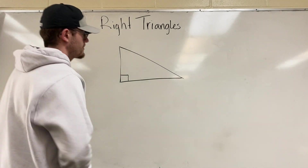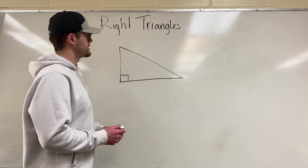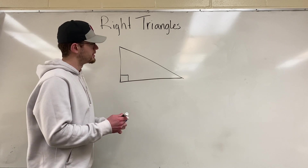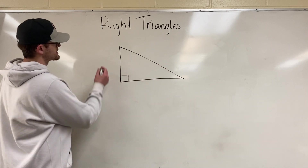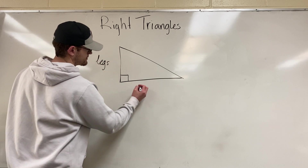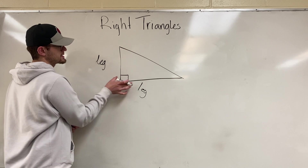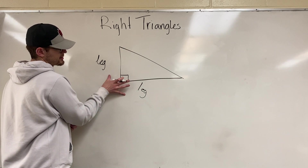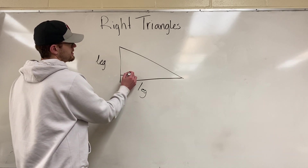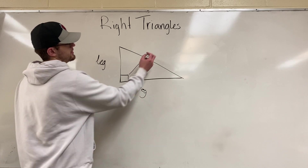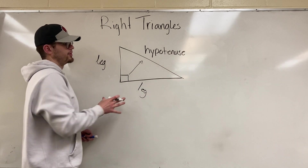All right, so right triangles. I'm going to start off with some vocab — really important that you understand all the components of a right triangle. We don't just call these sides once we're talking about a right triangle; we have different names. The two sides that make up the right angle are called the legs. The side directly opposite the right angle — which is also the longest side — is called the hypotenuse.